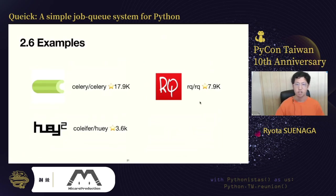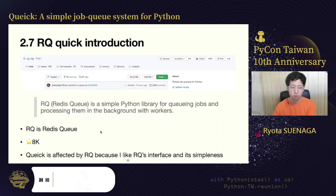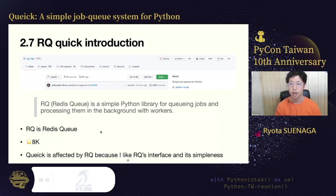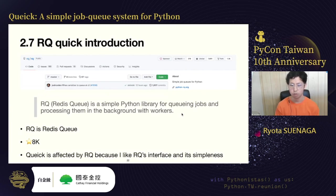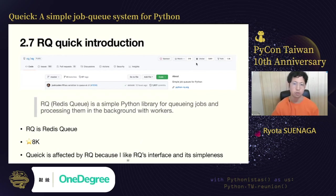These are examples of existing job queue systems in Python: Celery, RQ, and Huey. By the number of stars, Celery is the de facto standard. RQ is a simple Python library that uses Redis and currently has approximately 8,000 stars on GitHub. According to its README, RQ is a simple Python library for queuing jobs and processing them in the background with workers.